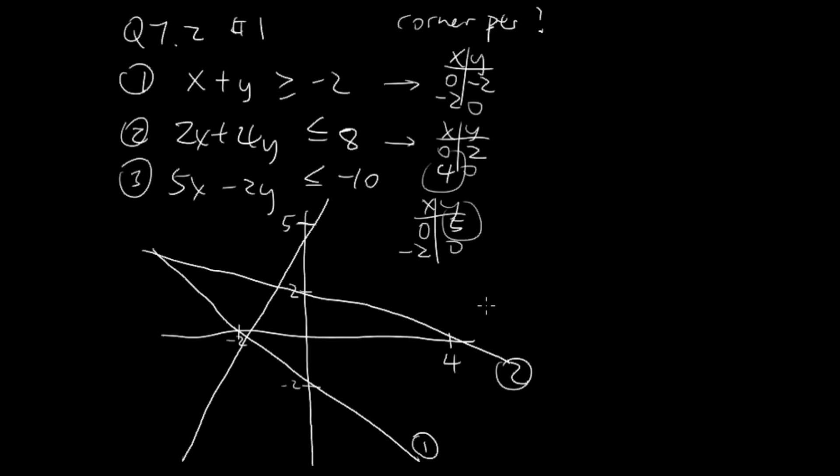Now we go ahead and do the shading. Line 1 is positive and it's greater than, so line 1 shades up. Then we can see that line 2 is y less than, so line 2 shades down, within this area. Line 3 is less than but it's negative, so it shades up. We can see that it's this area over here.